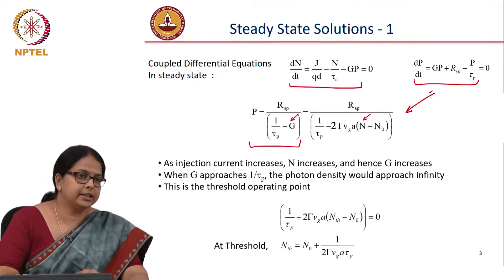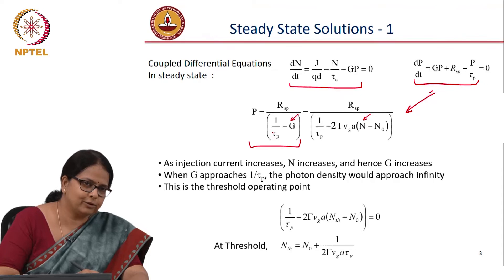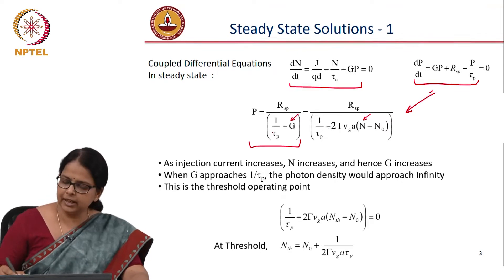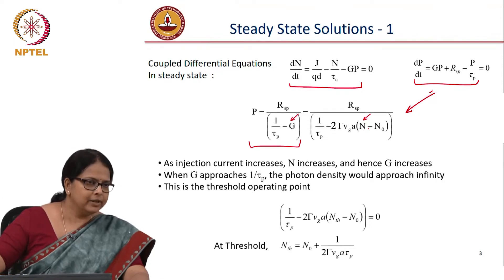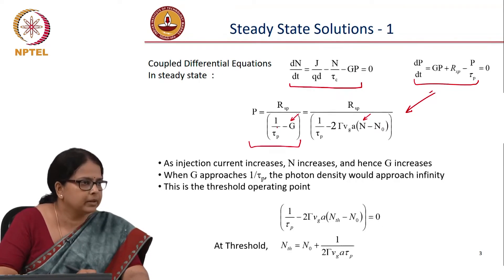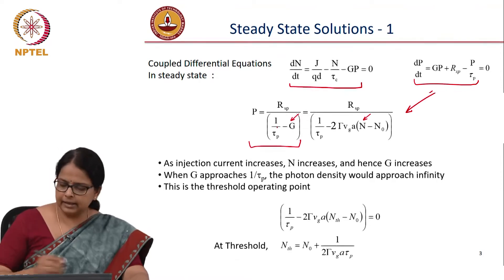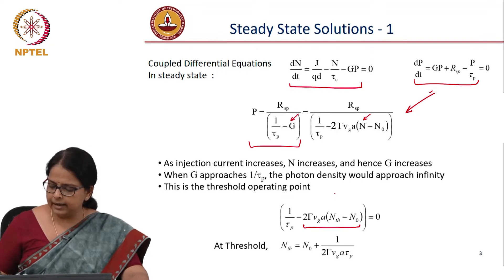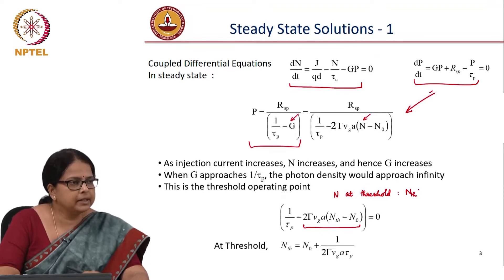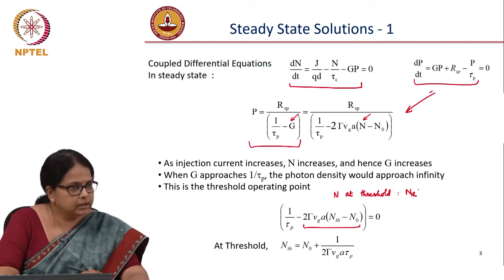If that condition is achieved, it means you should have infinite photons coming out of the system, which is not physically feasible. So we always say that g, or n in the system, is clamped at some value such that g is slightly lower than 1/τp. That is the threshold condition, and at threshold condition 1/τp − g is approximately zero. The n at threshold is what we represent as n_th — the excess carrier density at threshold condition.